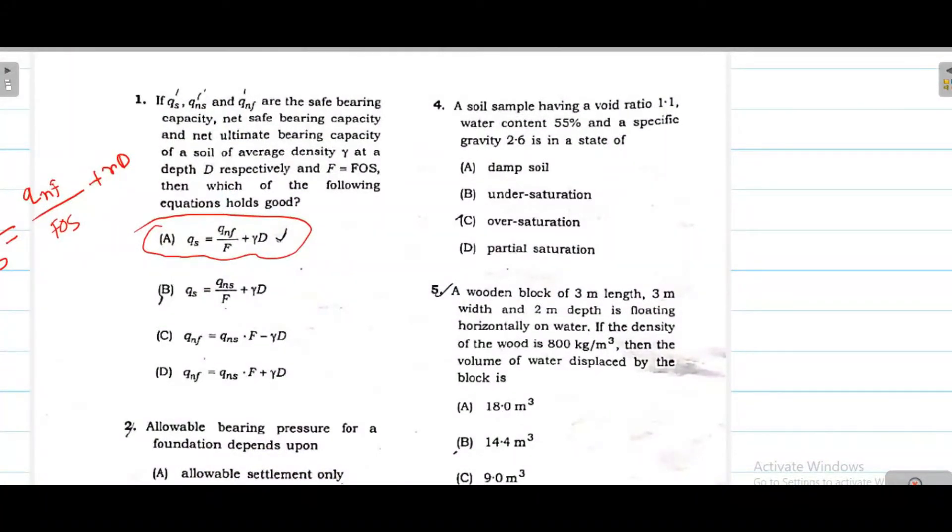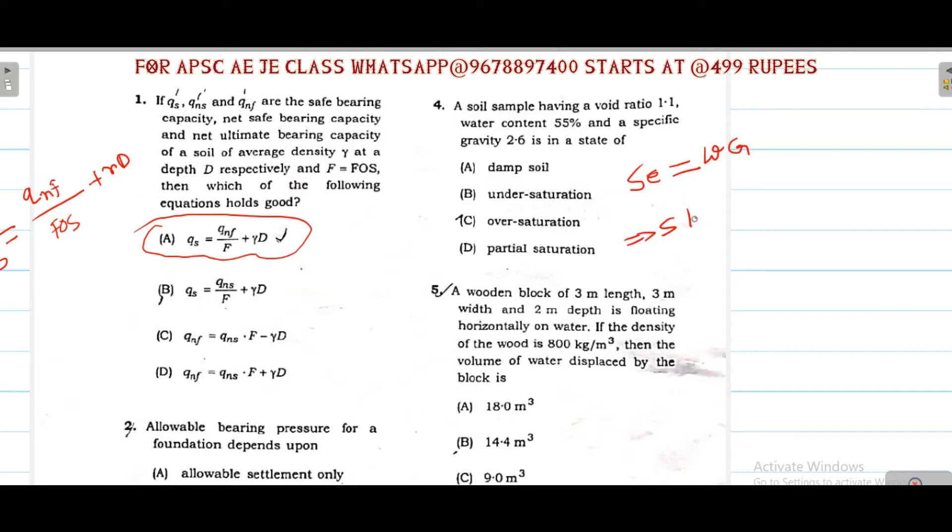This soil having void ratio 1.1, water content 55 percent, specific gravity 2.6. So what type of saturation - oversaturation, damp soil, undersaturation, partial saturation. Obviously, the formula you have to remember is SC equals WG. If you try to solve, the S value is more than 1, which means option C is correct - the soil is oversaturated.